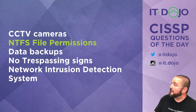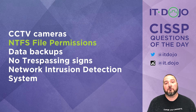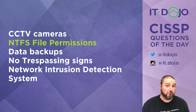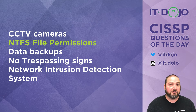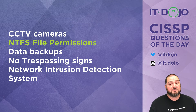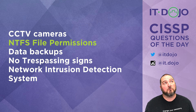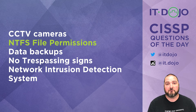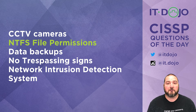The next one on the list was data backups — that's not correct because data backups are a corrective control. Those are there for when things have gone bad and you need to get stuff back; prevention didn't work, so now you need to correct. The other option, no trespassing signs, falls more in the world of deterrence. They do not prevent somebody from climbing that fence, but they could deter somebody from doing so — a subtle but important distinction.